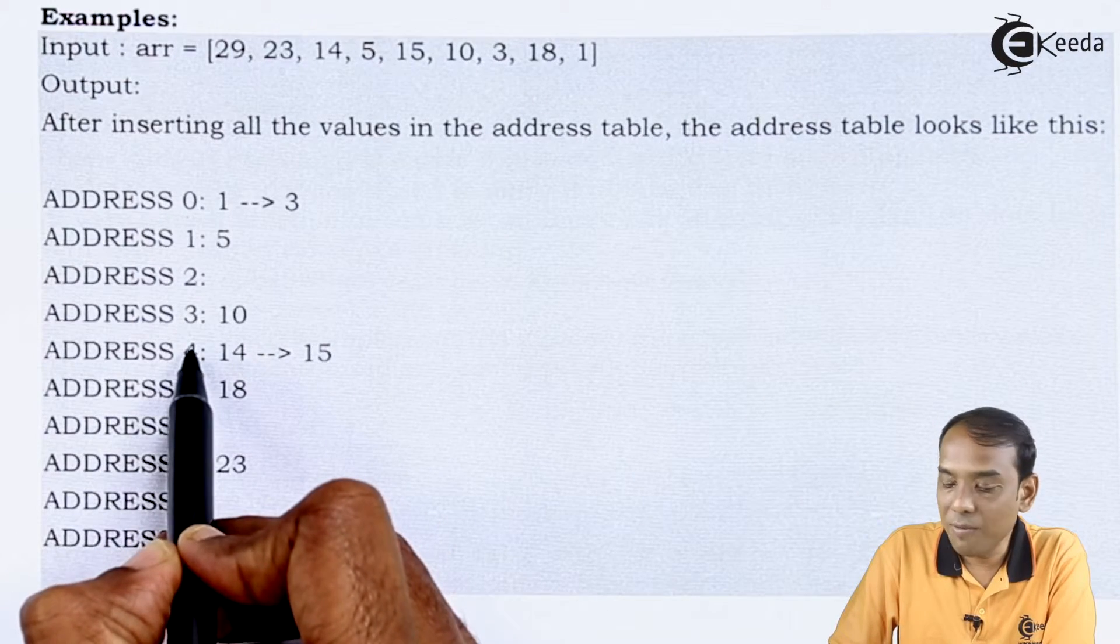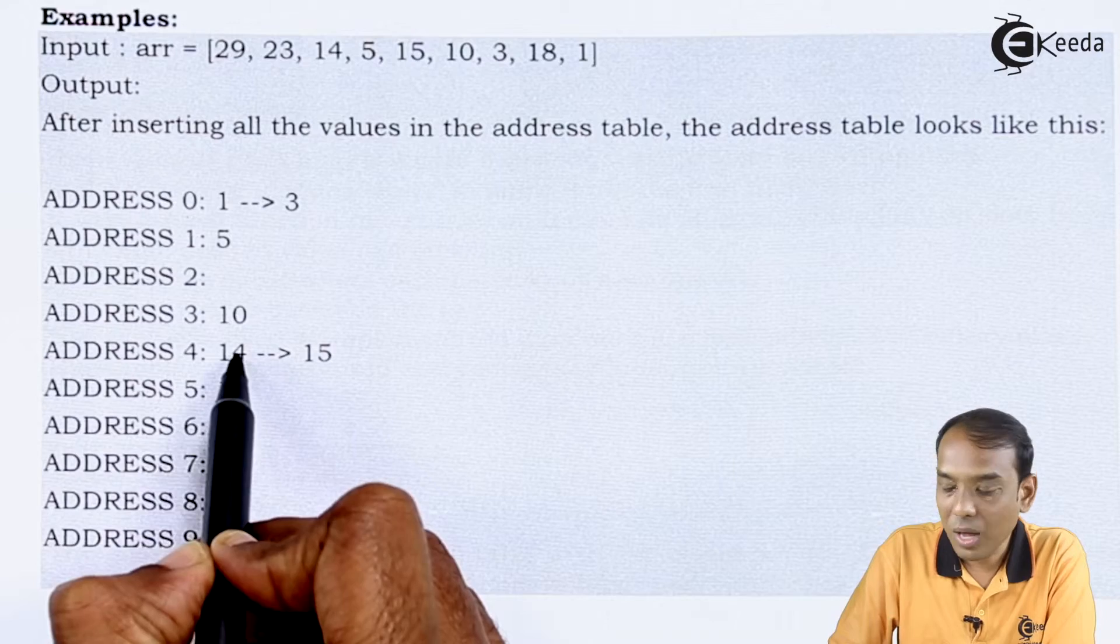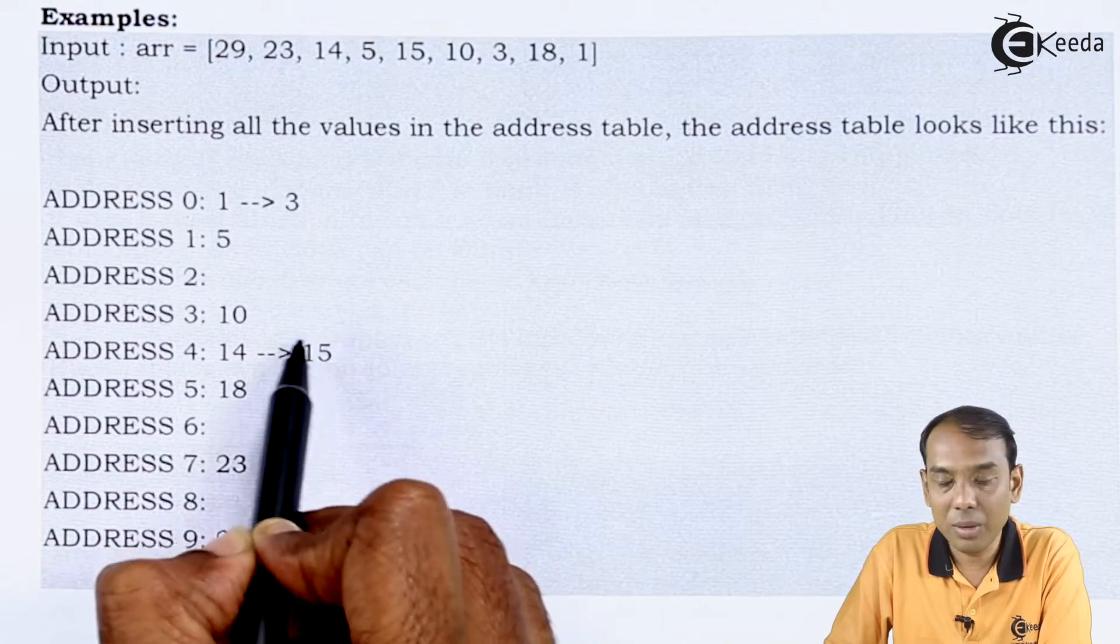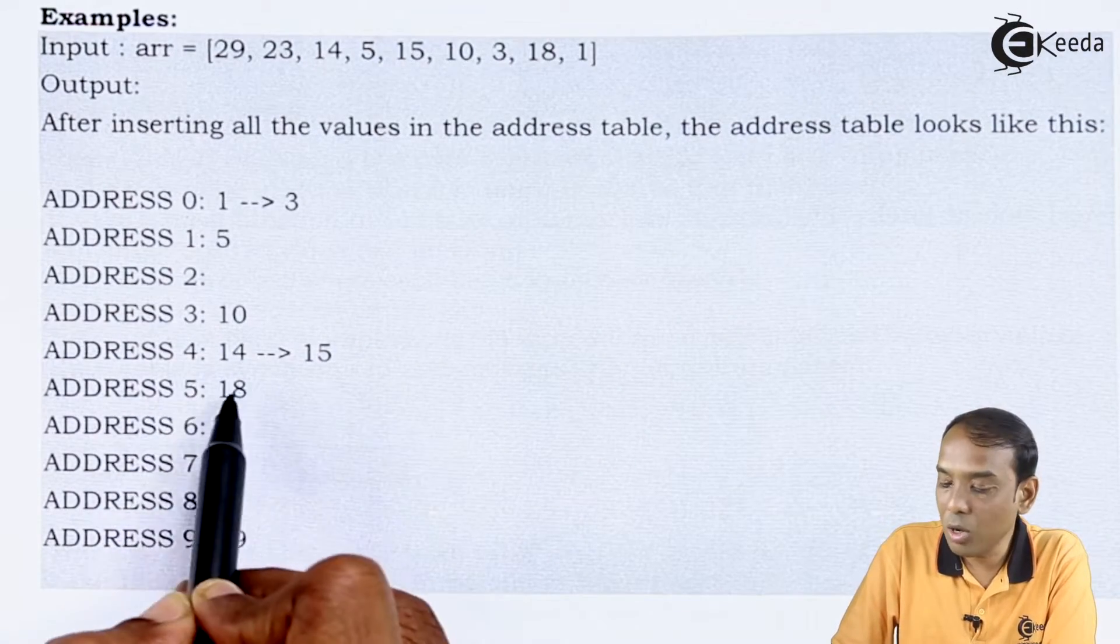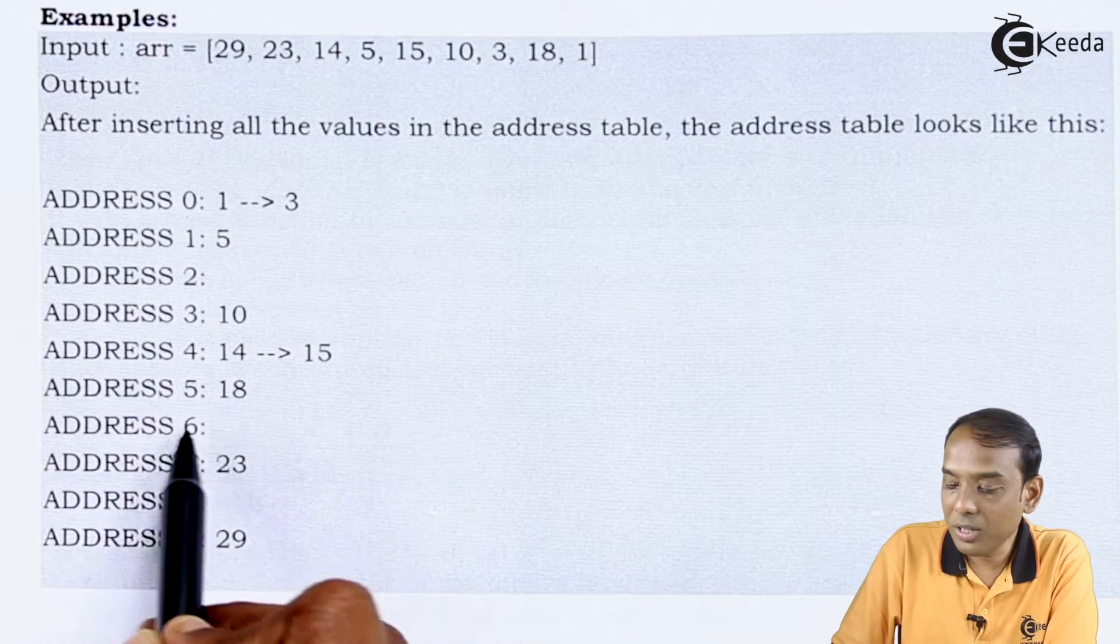Then I move to address number 4, in which I am going to have the value as 14, and which is going to point me to 15. Then at address number 5, I have the value 18. At address number 6, once again due to the hash function which I have used.